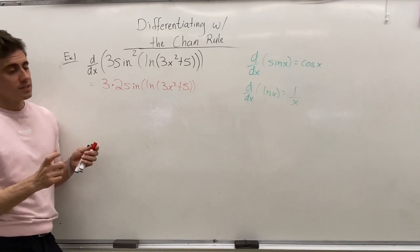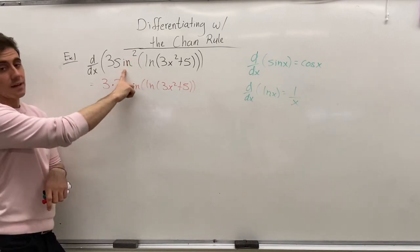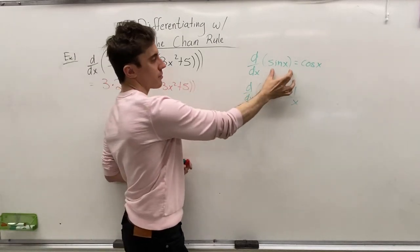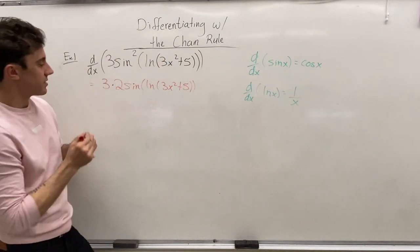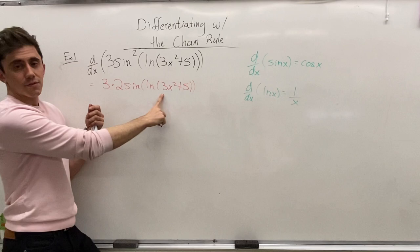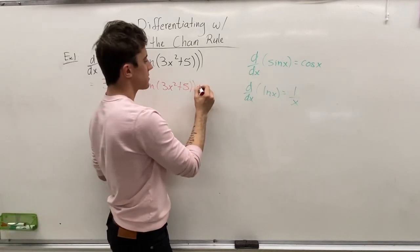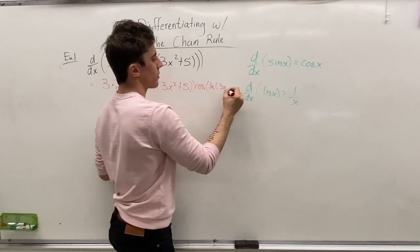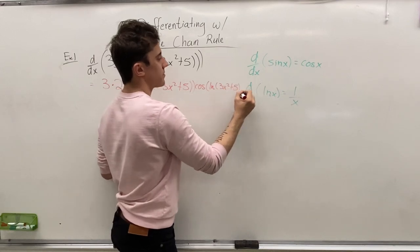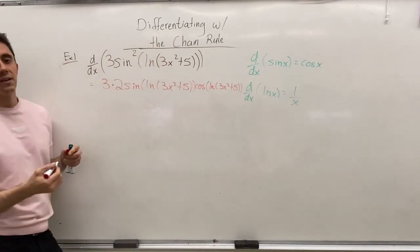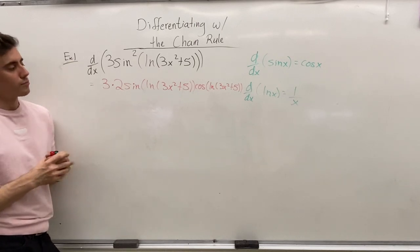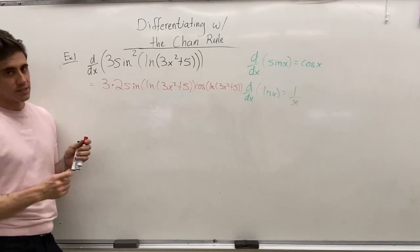And now we're not done. Since we differentiated through sine, our chain rule comes into effect, and we have to use the fact that the derivative of sine is cos, and now we have the sine of ln of 3x squared plus 5 times the cos of the ln of 3x squared plus 5. Multiplying all of that through and making sure our brackets are properly written, and we're not done.